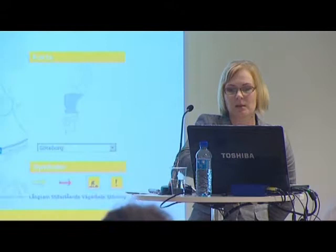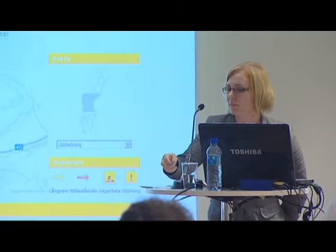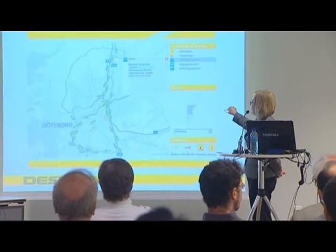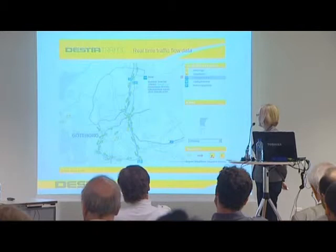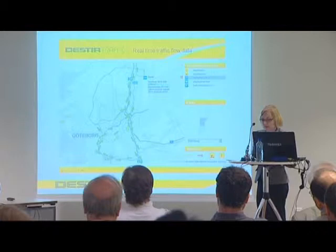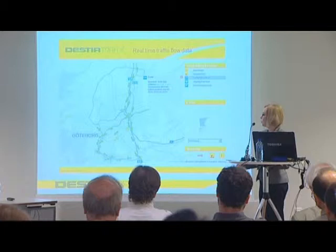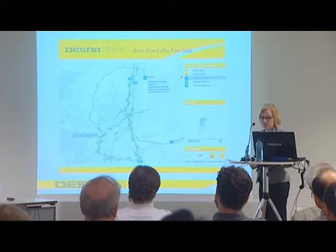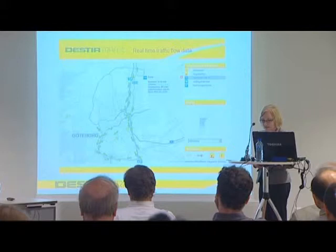Here is an example screenshot of the pilot. Real-time traffic flow data is shown — green arrows represent that traffic is flowing well and yellow arrows indicate slower traffic. This real-time data comes from sensors like cameras and loop detectors. The thresholds for defining slow or flowing traffic are defined by Destia.